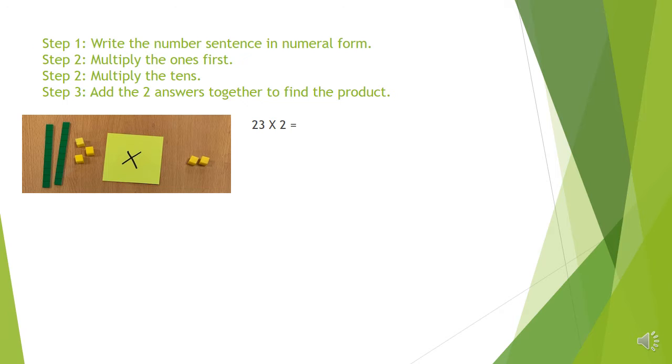Step two is to multiply the ones first. So I don't need to look at my tens right now, only the ones. And I have got three multiplied by two. Three times two is quite an easy calculation. You can do that on your fingers counting in your two times table. Two, four, six. The answer to that part would be six. Step two. So I've done this one, let's tick them off.